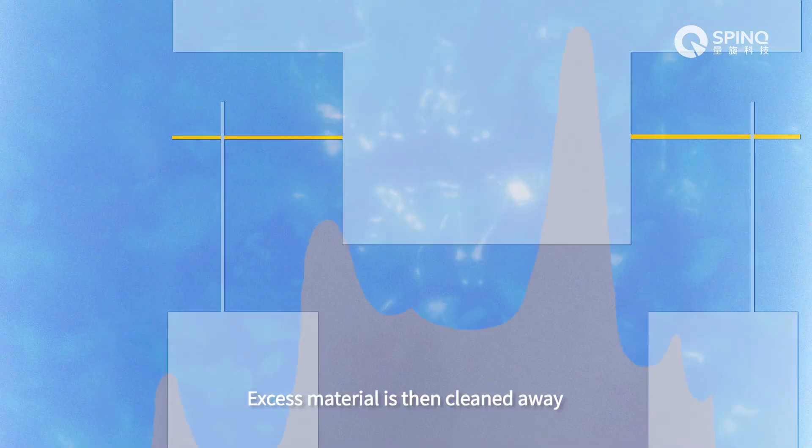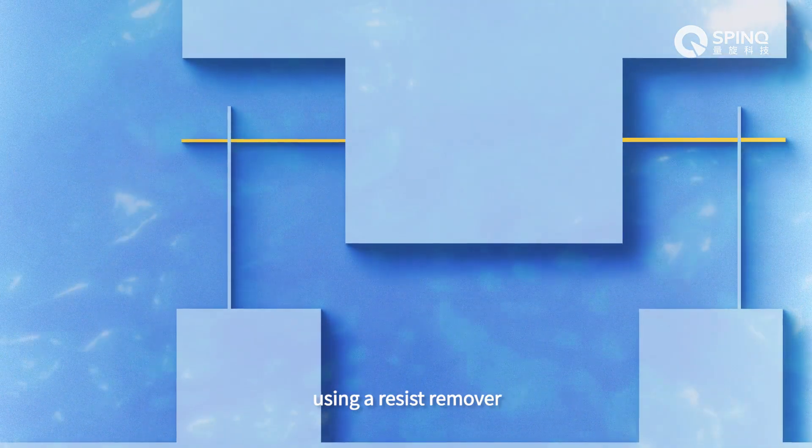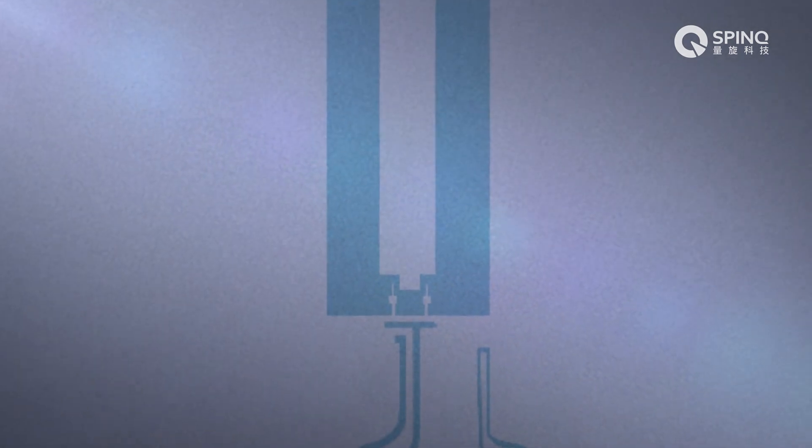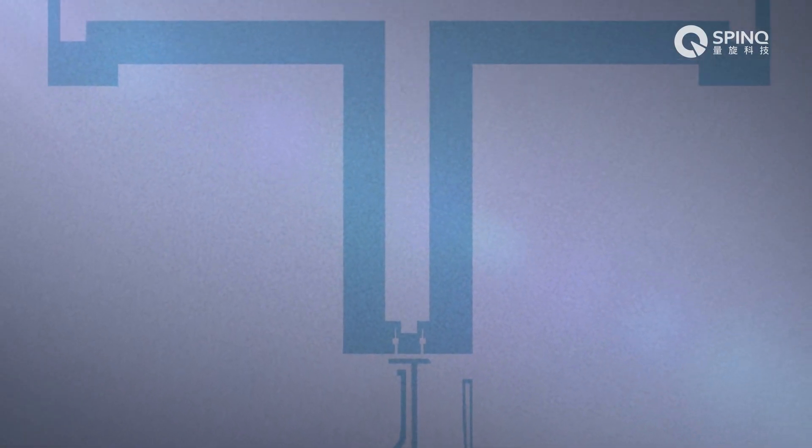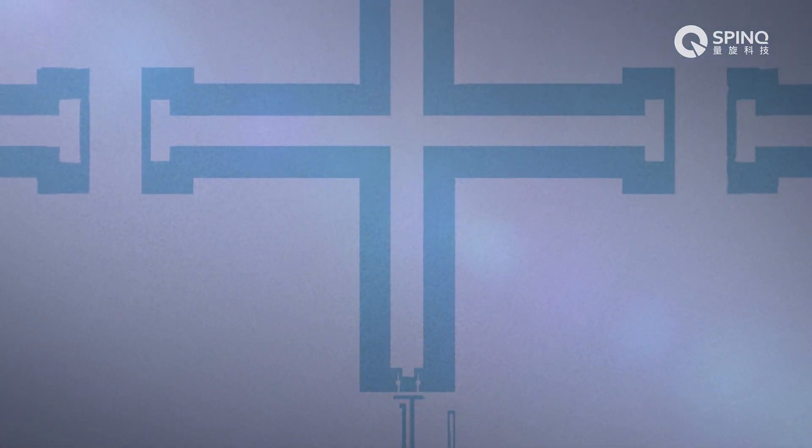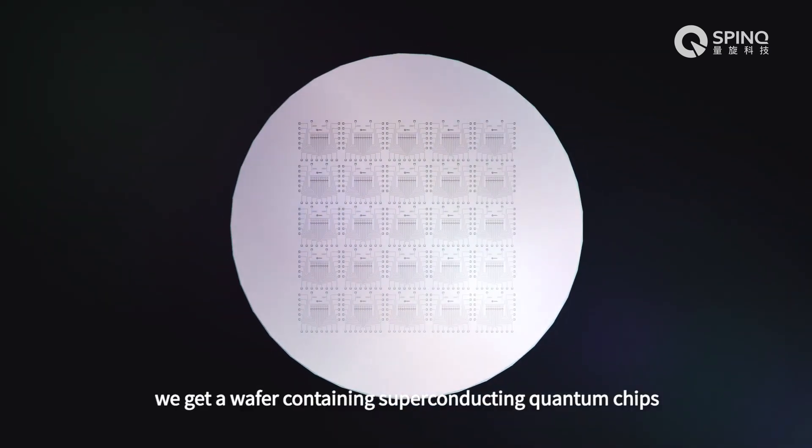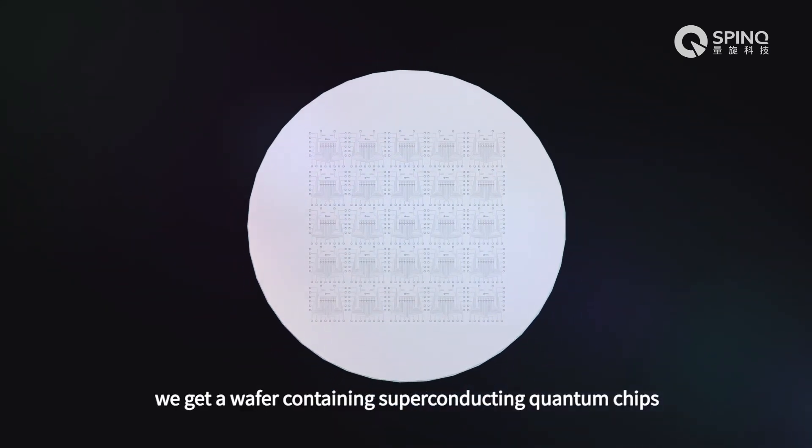Excess material is then cleaned away using a resist remover. Finally, we get a wafer containing superconducting quantum chips.